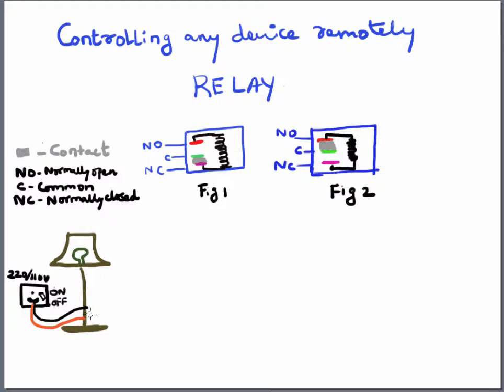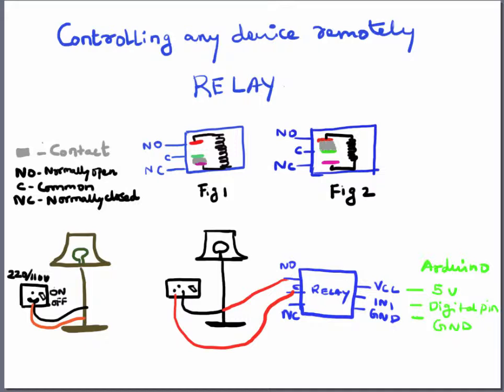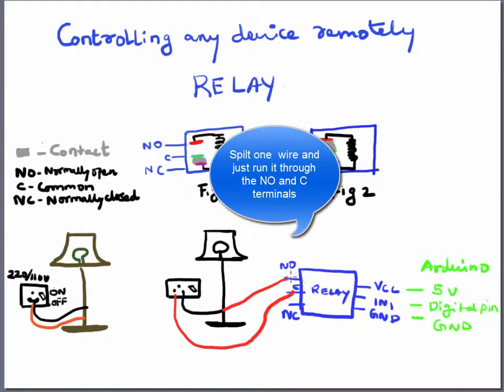Now let's see how to hook this up. You want to leave the ground as it is, and take the phase wire and connect it to the common. The other end of the phase wire you're going to connect back to the socket. That's how you make this connection on the relay side.